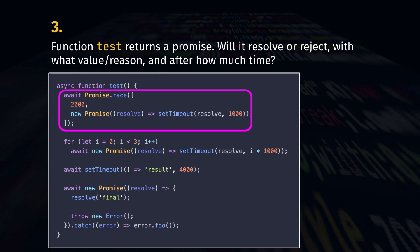Let's break it down. First promise: the plain value 2000 is treated as a promise that resolves immediately, so it wins the race. Almost no time taken.